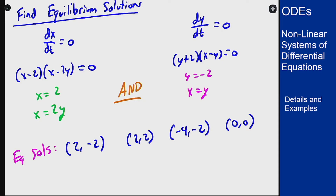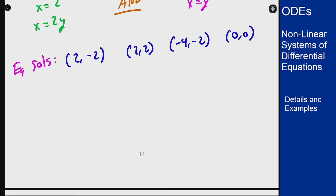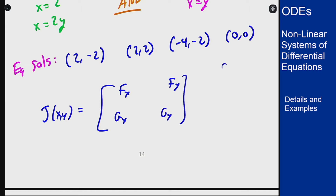Now to classify these I want to find the linearization at each of these points. The easiest way is to find the Jacobian matrix overall and then just plug in these values. As a matrix, J(x,y) is [fx, fy; gx, gy], where dx/dt equals f(x,y) and dy/dt equals g(x,y).